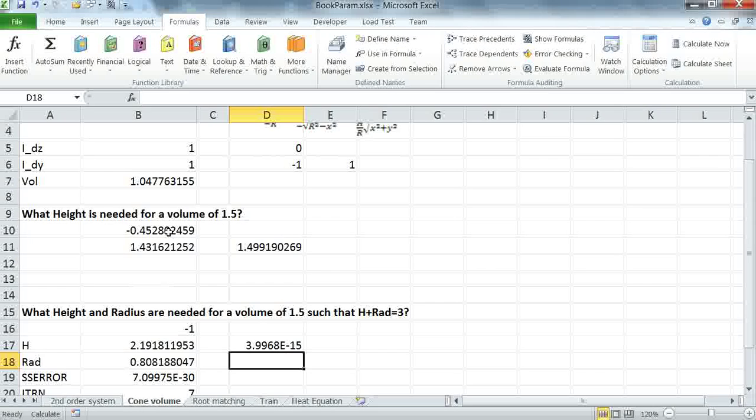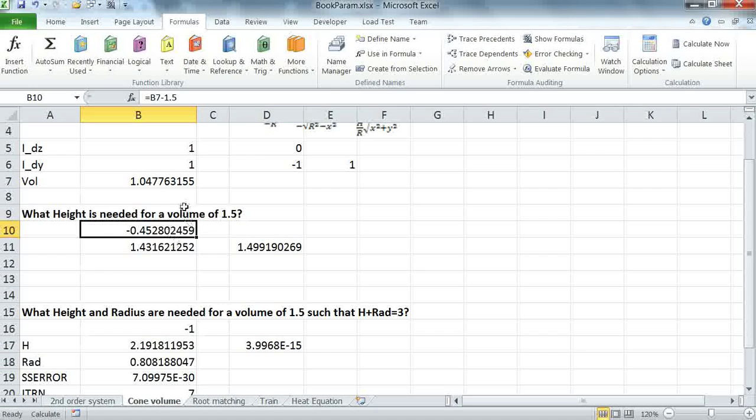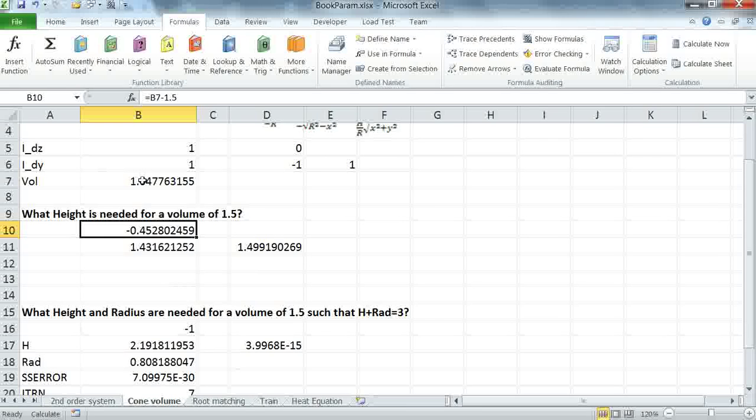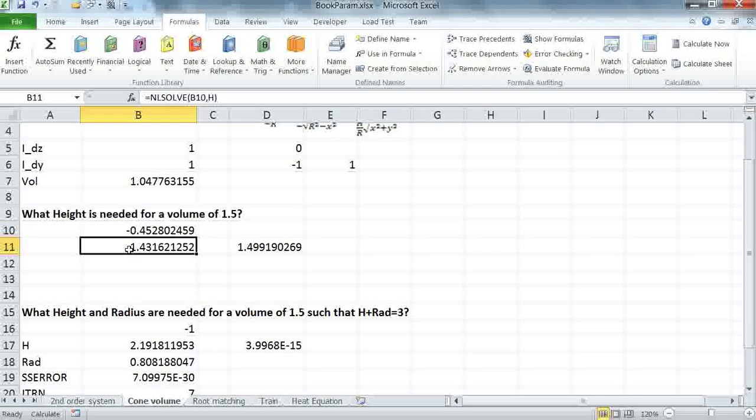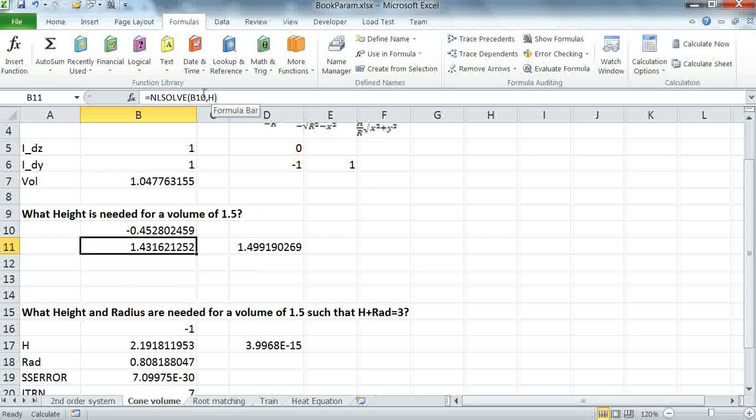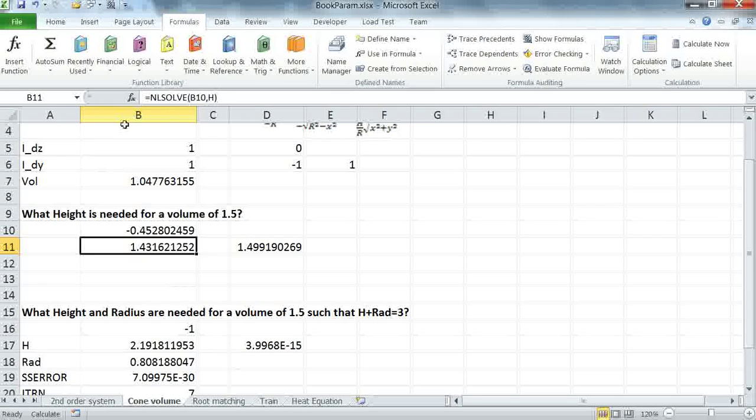Next, you define constraints that basically measure the difference between your obtained result and your target result, and the third step is simply to solve for your variables or your parameters by passing these constraints to NLSolve.